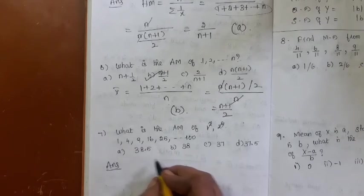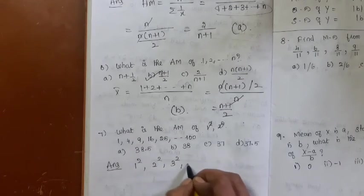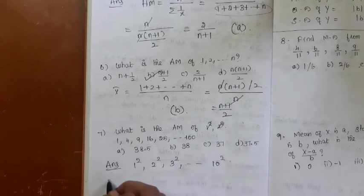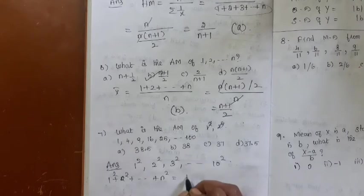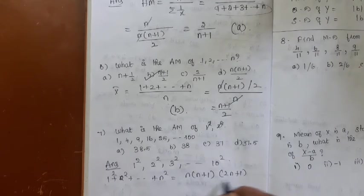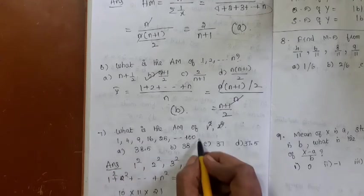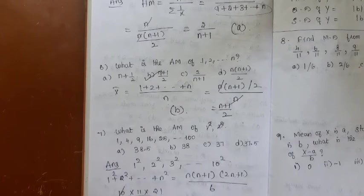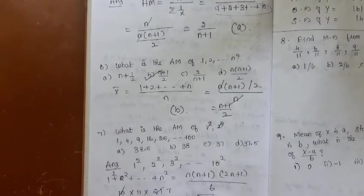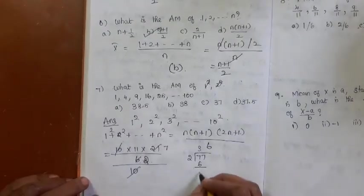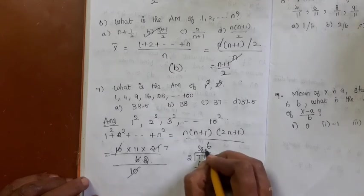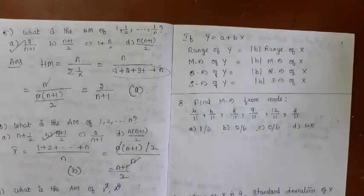Problem: What is the arithmetic mean of 1, 4, 9, ..., 100 (i.e., 1², 2², 3², ..., 10²)? The sum of squares of first n natural numbers is n(n+1)(2n+1)/6. For n = 10: sum = 10 × 11 × 21 / 6 = 385. Dividing by 10 observations gives 38.5. Option A is the right answer.